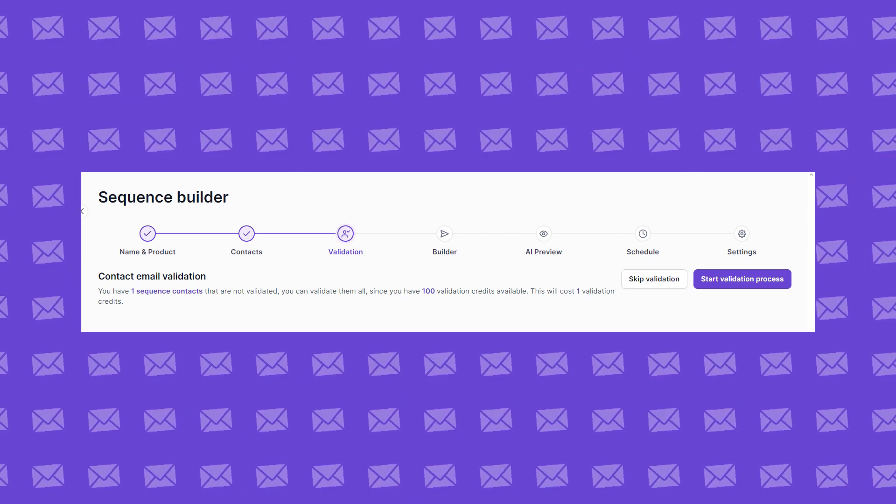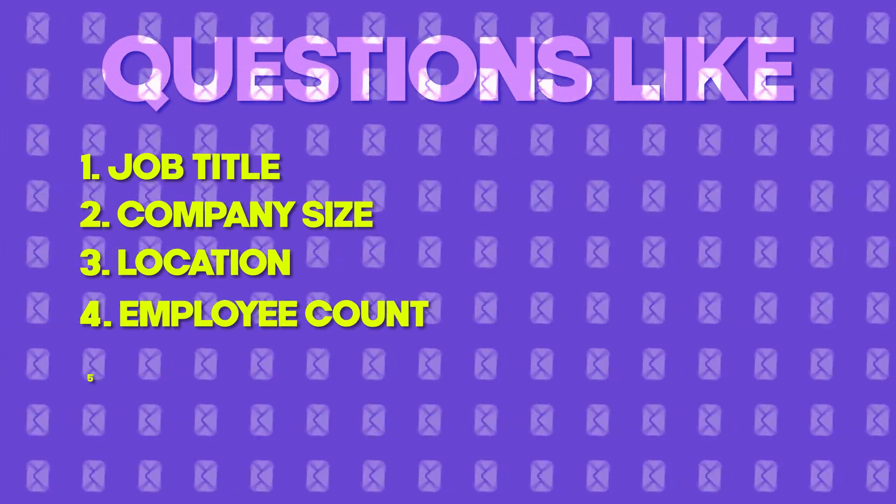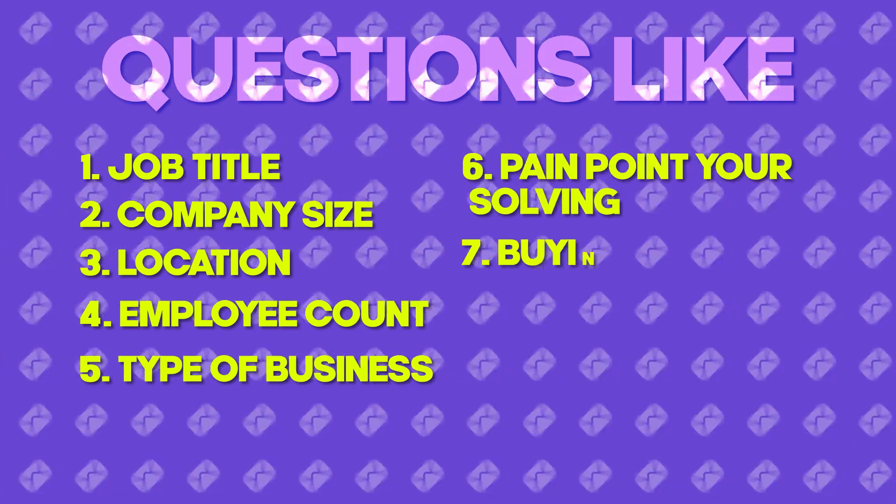Luckily, both of these things have an easy fix. To filter out inactive inboxes, you can use SalesForge or any other email verification tool. In SalesForge, you can validate emails right in your sequence just before sending. To make sure you're only sending emails to qualified leads, you'll need to do a bit more work. First, identify your ideal client profile by asking questions like job title, company size, location, employee count, type of business, pain point you're solving, and buying intent. Only send emails to leads that match your criteria.